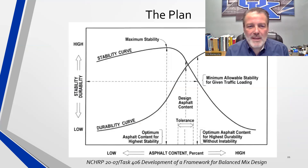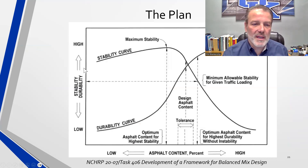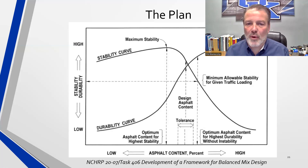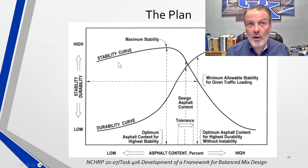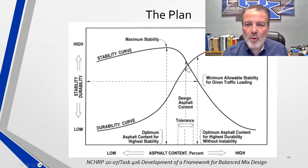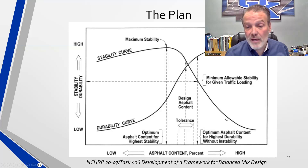This graph from NCHRP 2007 work plots stability and durability versus asphalt content. With very low asphalt content, the mix is highly stable but not durable. As you add asphalt, durability increases to a point — then adding too much makes the mix very durable but prone to rutting; it will even push out from under the roller during construction. There's a point of diminishing return, and finding that balance is the goal.